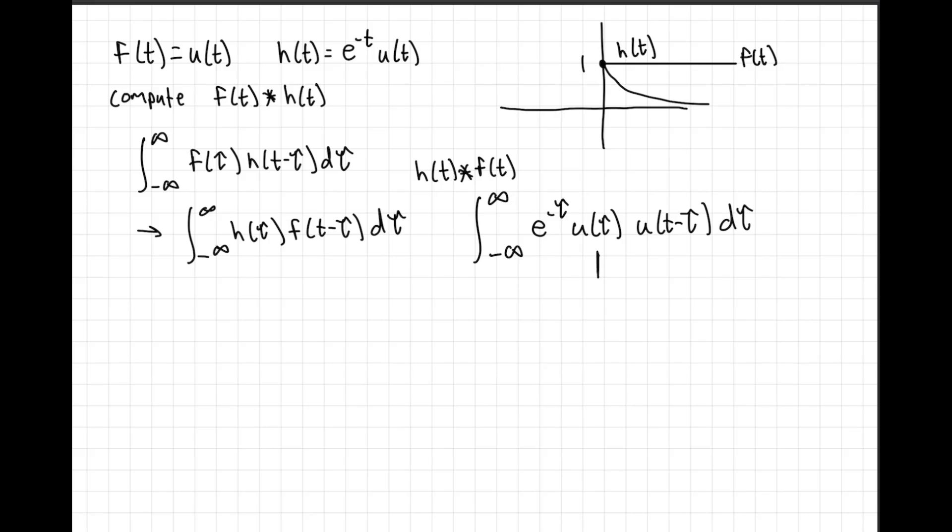A couple things that we can do is update our bounds of integration because we have these unit step functions involved. The reason this is advantageous is because the unit step function for the most part is equal to 0, so that would throw away part of the integration. When is this equal to 1? u of tau equals 1 when tau is greater than or equal to 0, and it's 0 otherwise.